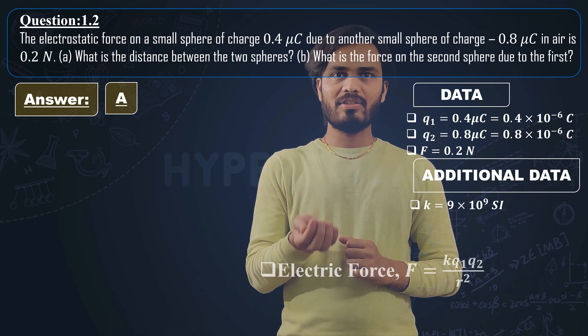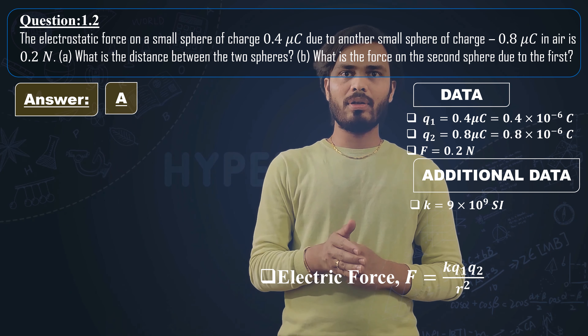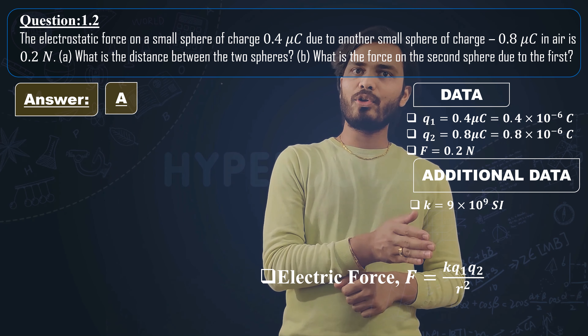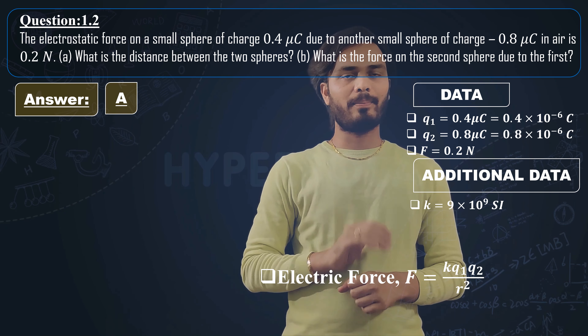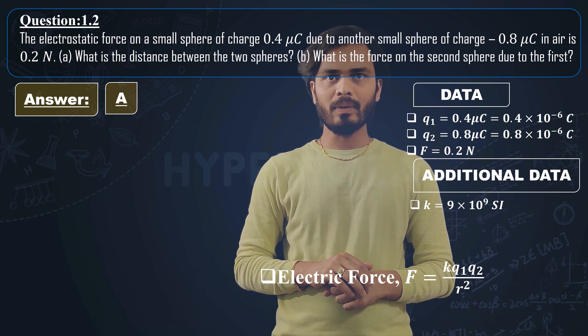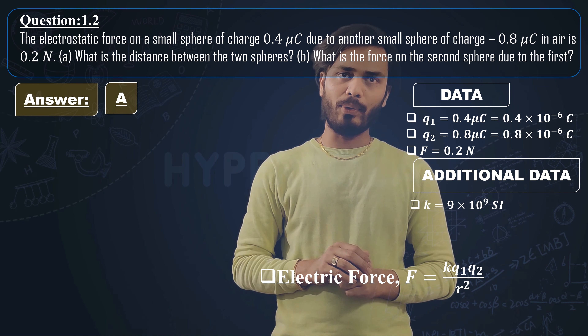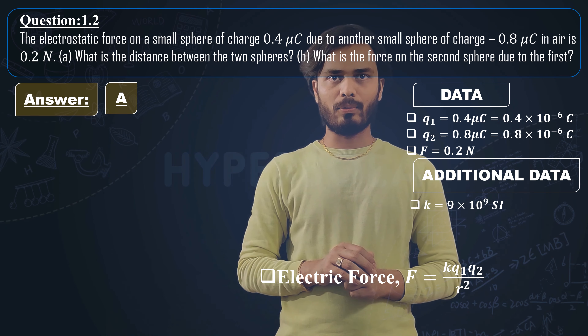First step: Electric force formula — F equals k q1 q2 upon r square. This is the electric force formula according to Coulomb's law.